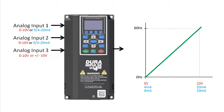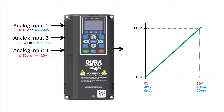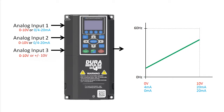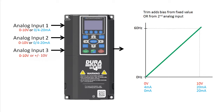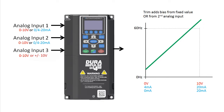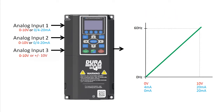You can reduce the gain to reduce the maximum output frequency. You can completely change the slope of the curve by adjusting the offset and the gain. You can trim the response using a fixed value or even another analog input to make the trim variable, and you can even create a custom volts-hertz curve.